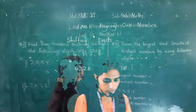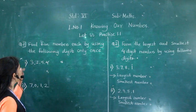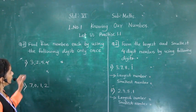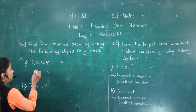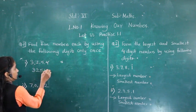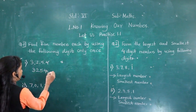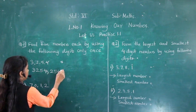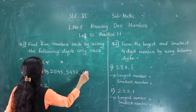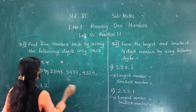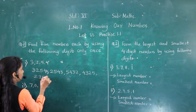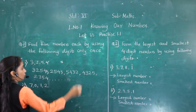Let's move to Exercise 1.1, Question 1: Find 5 numbers each by using the following digits only once. We can make several numbers using the digits. For example: 3254, 2543, 5432, 4325, and 2354. This way we can form many numbers.